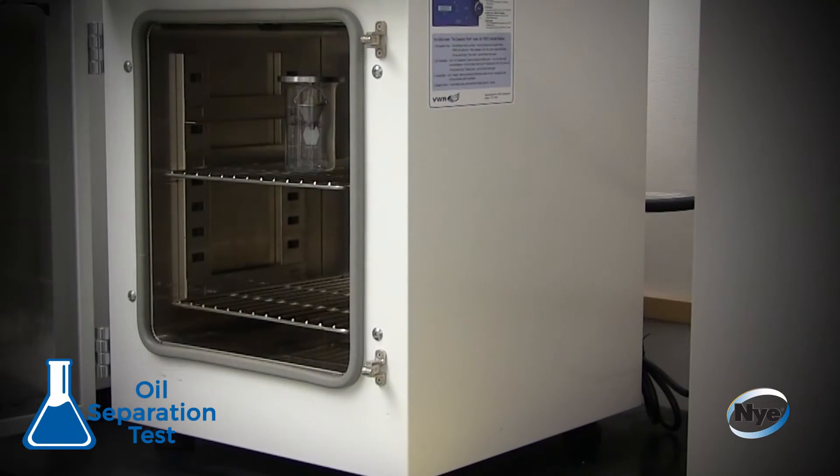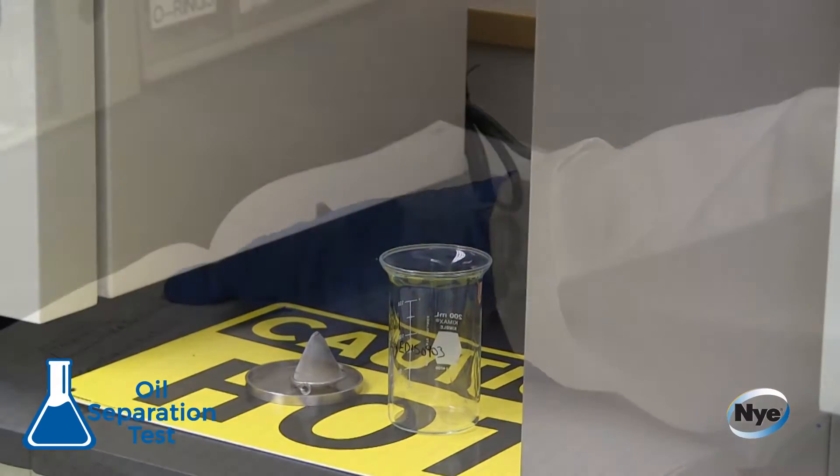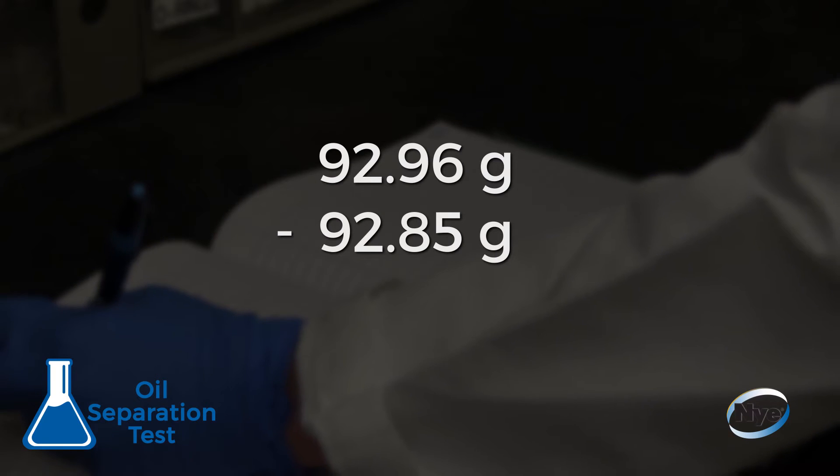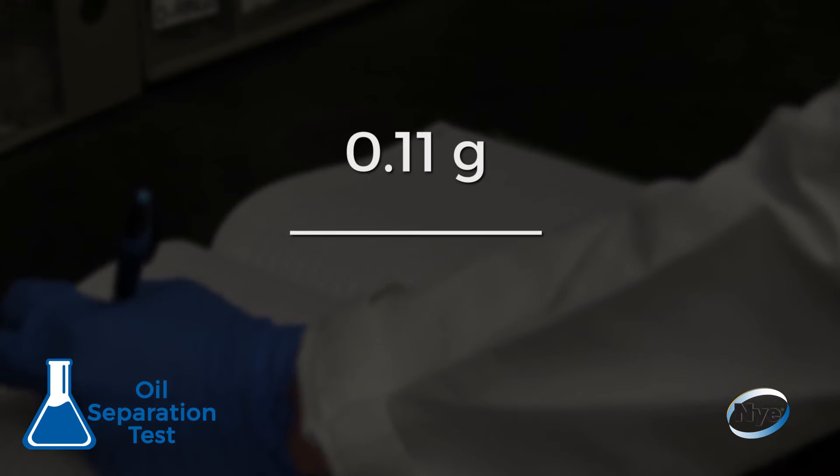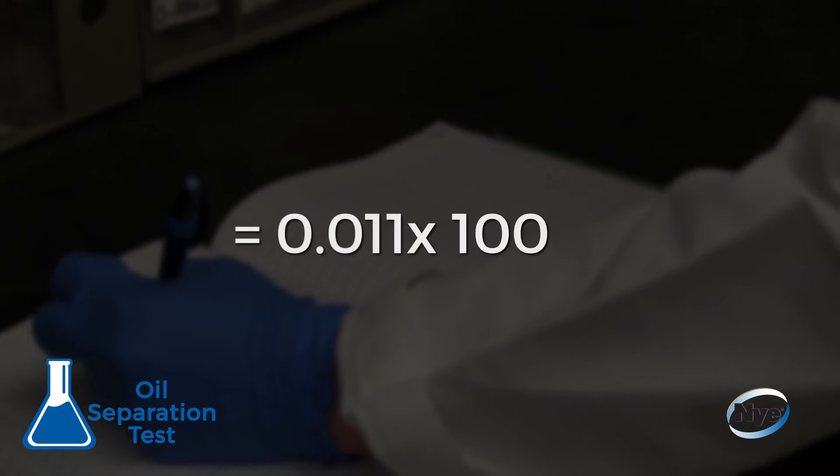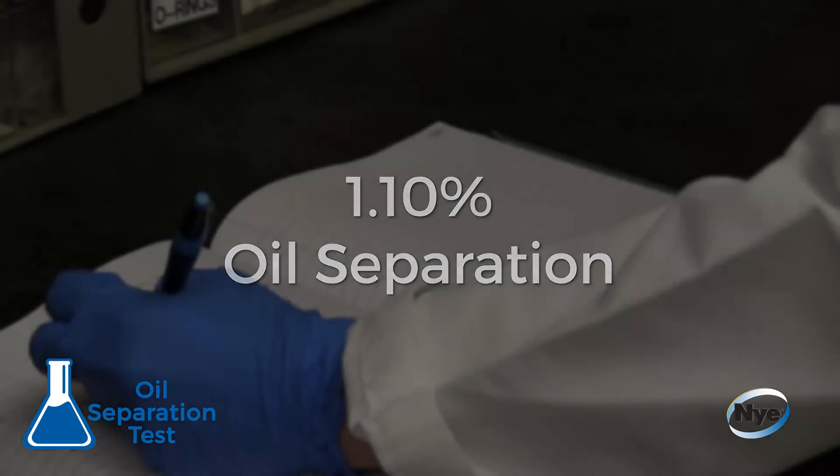At the end of this heating period, the technician will remove the apparatus and weigh the beaker containing any separated oil. The previously determined empty beaker weight is then subtracted from the weight of the beaker containing oil, divided by the original grease weight, and multiplied by 100 for a percentage result. The oil is the primary lubricating component of the grease.